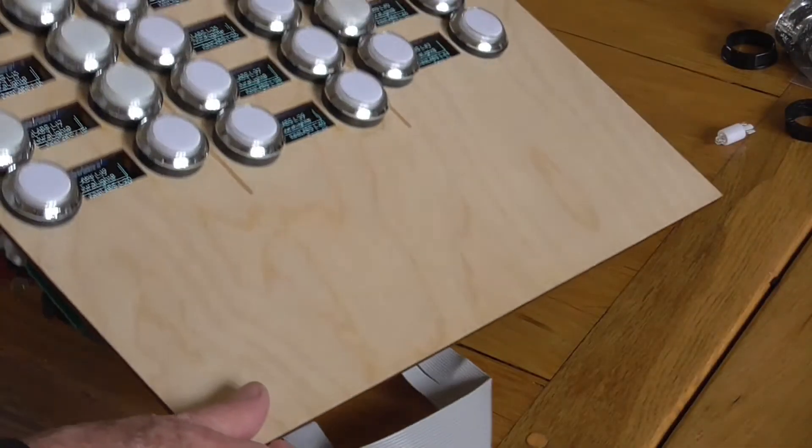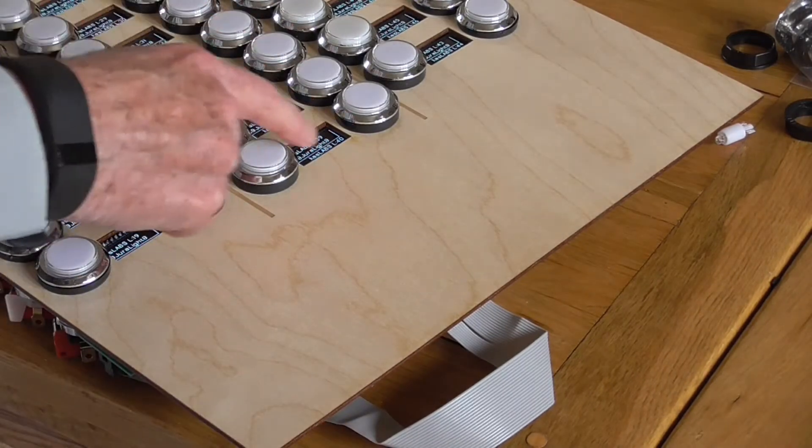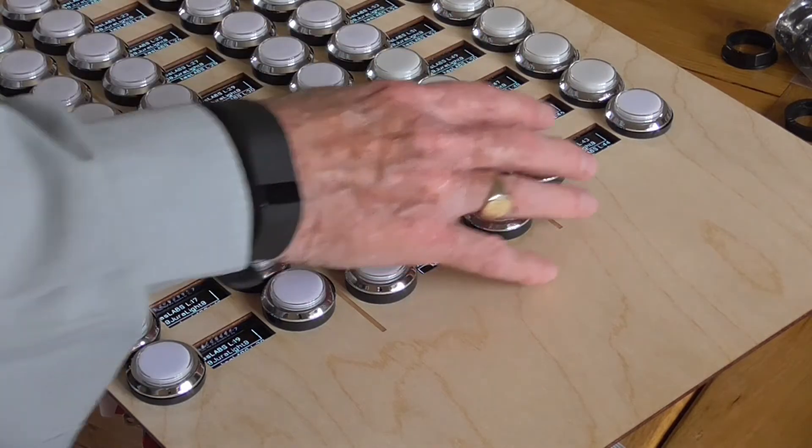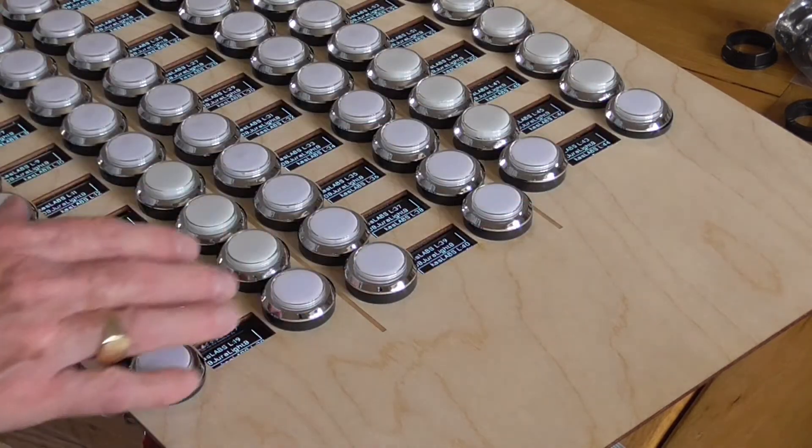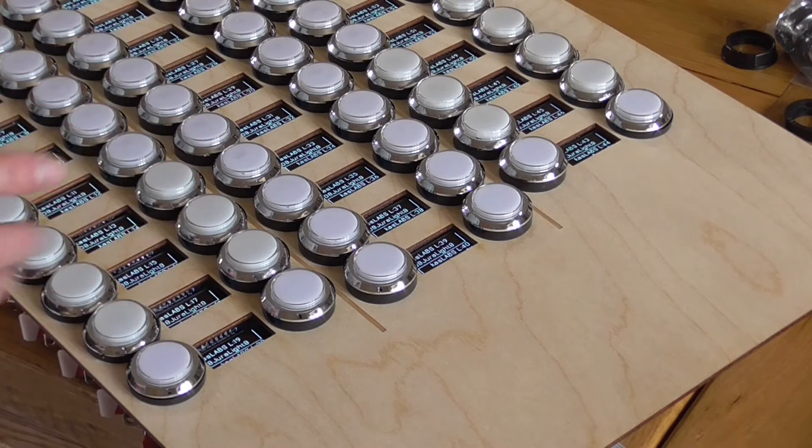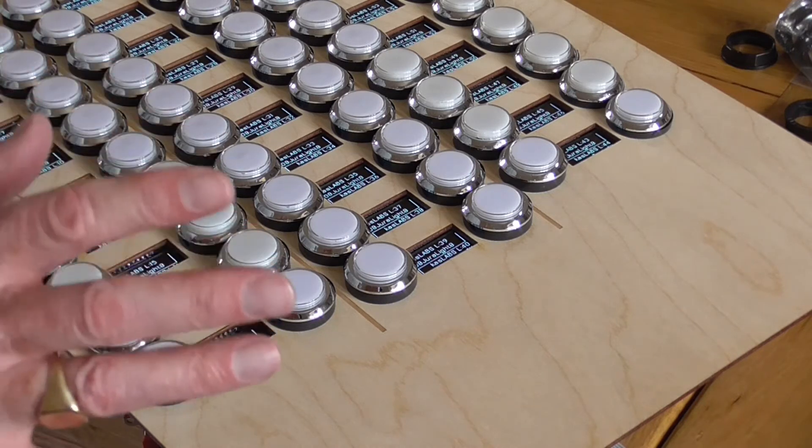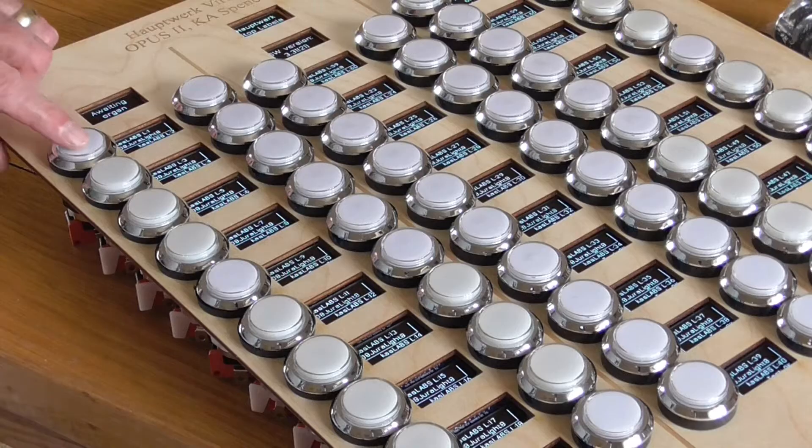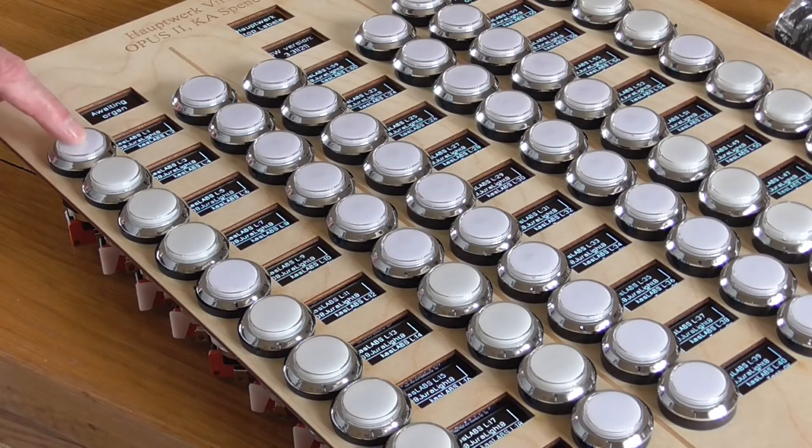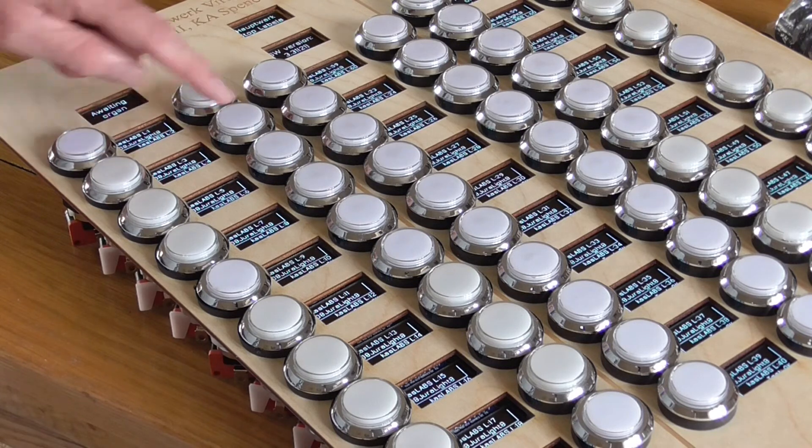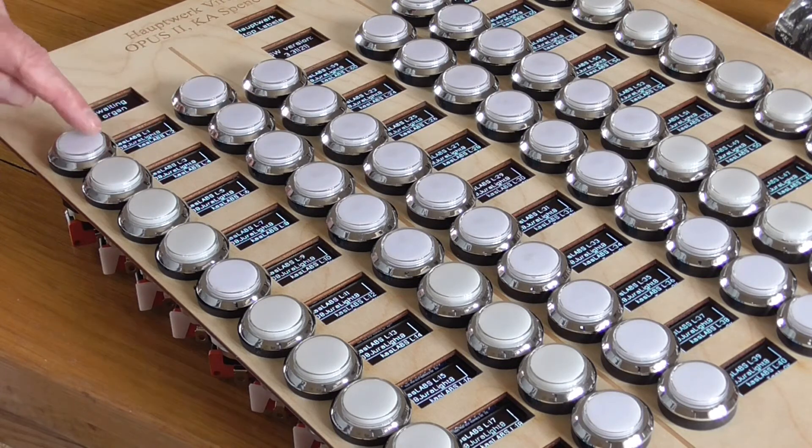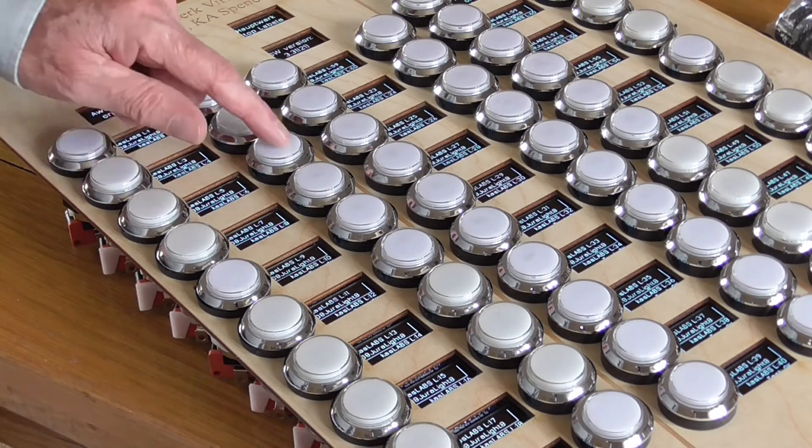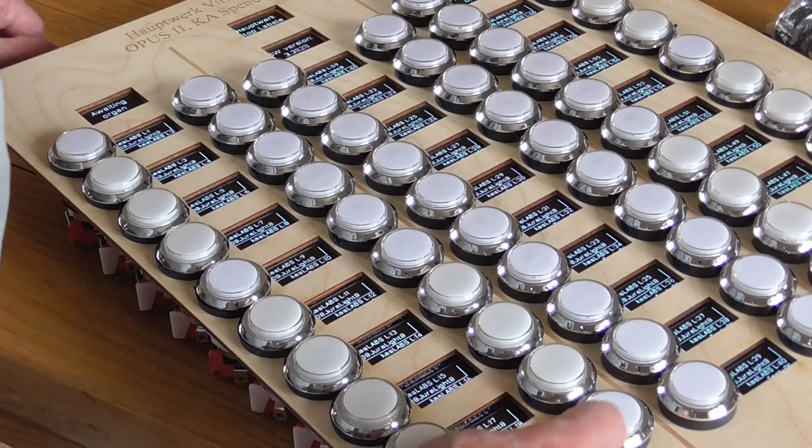We should then examine the numbers on each of the OLEDs to make sure that they marry up with the expected stop numbers. And in the right-hand stop jam, we're using a symmetric arrangement between the two stop jams. So in the right-hand stop jam, that is stop number one, two, three, four, and this is exactly what we've got here: L1, L2, L3, L4, L5, L6, all the way down to L19 and L20.